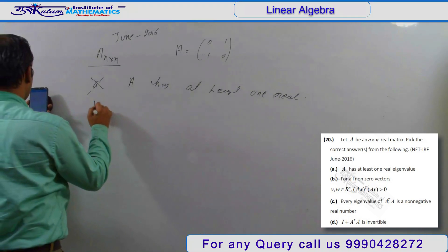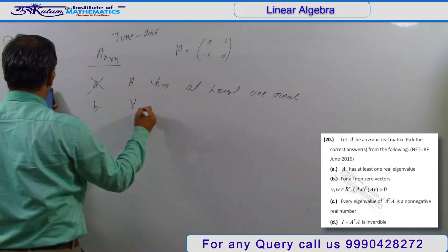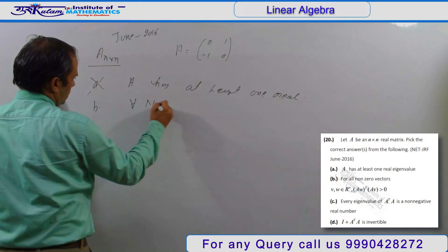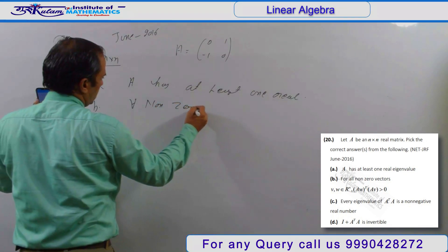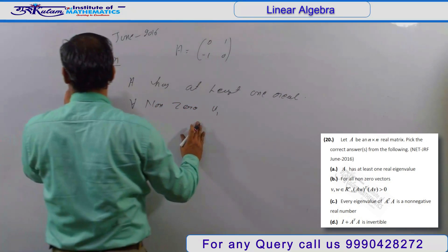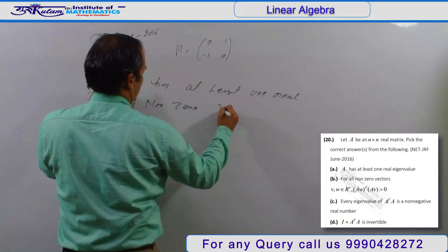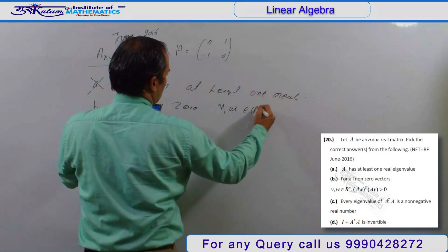Second option is that for all non-zero U, V, and W belonging to R^n...